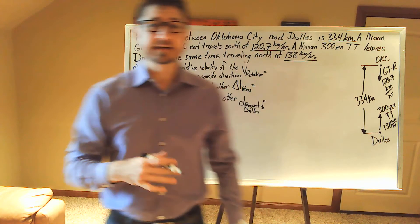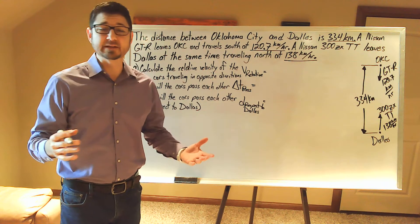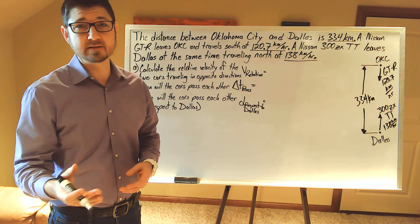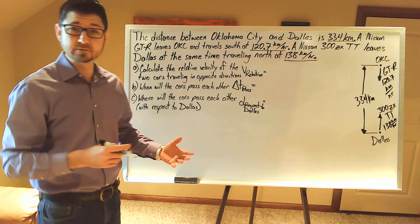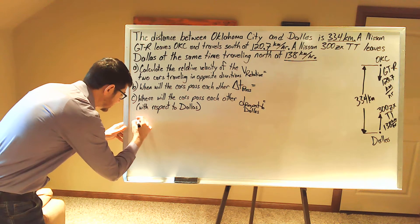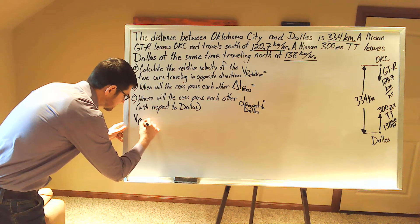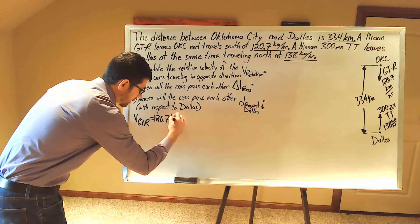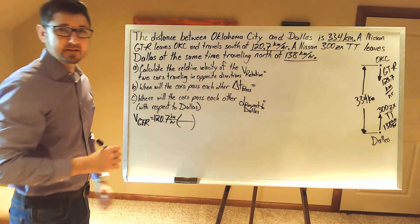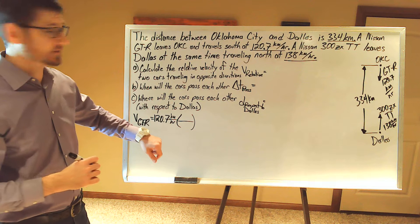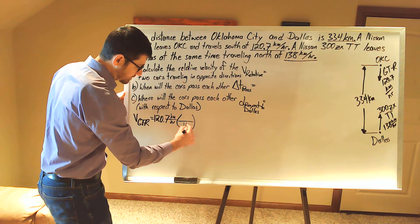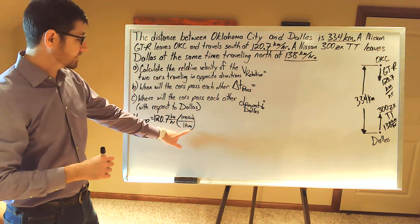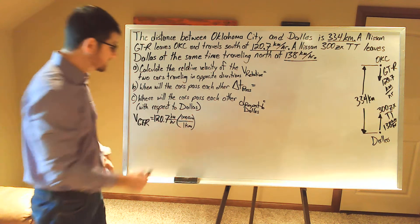We have our velocity in units of kilometers per hour, but we need to convert this to units of meters per second. We'll use dimensional analysis to convert our units. Starting with the velocity of the GT-R: it is 120.7 kilometers per hour. Using dimensional analysis, let's convert the distance first — in one kilometer we have 1,000 meters. The unit of kilometer in the numerator and kilometer in the denominator cancel.